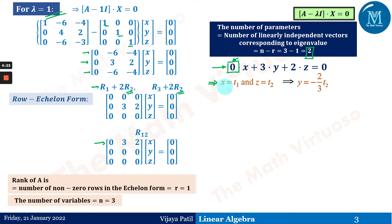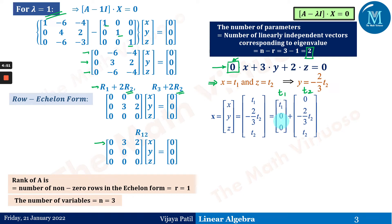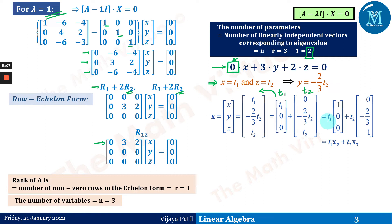Note: the choice of which variables to assume affects which basis vectors you get. With x = t1, z = t2, and y = −(2/3)t2, we write the solution vector [x, y, z] = t1·[1, 0, 0] + t2·[0, −2/3, 1], splitting into a t1 part and a t2 part.